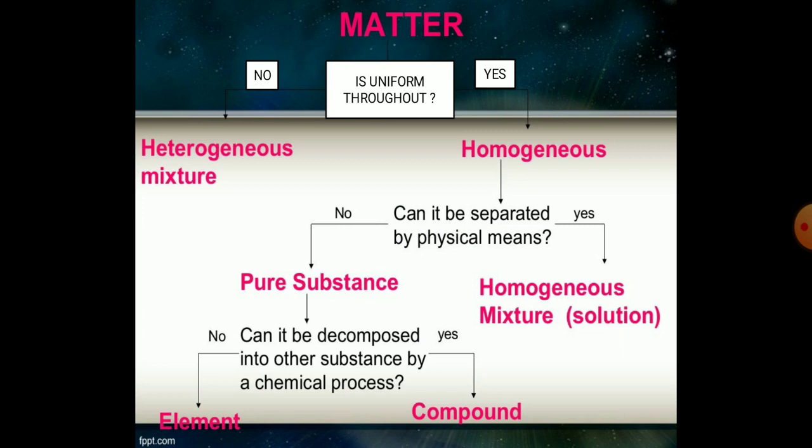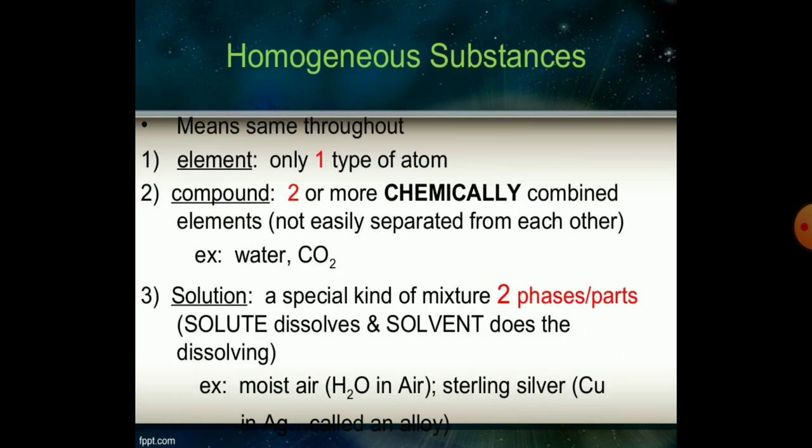Homogeneous mixtures are solutions which are mixed with one or more than one solutions. If the pure substance can be decomposed into other substances by chemical process, that is elements and compounds. Homogeneous substances means the element and it is only one type of atom. If we consider the compound, then two or more chemically combined elements not easily separated from each other, like water or carbon dioxide.